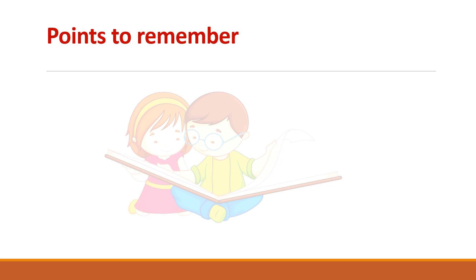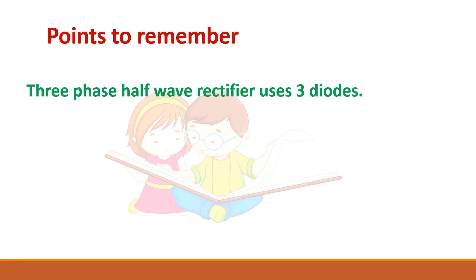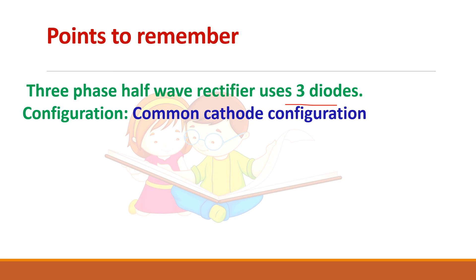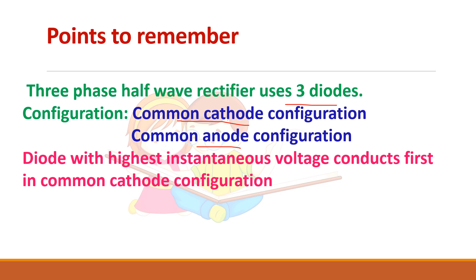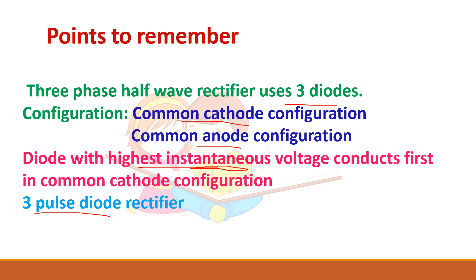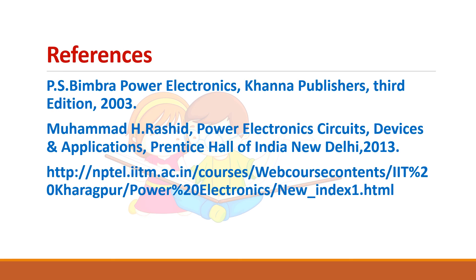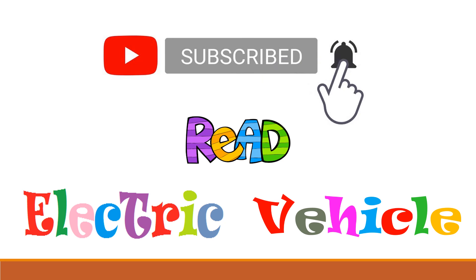Key points to remember: the 3-phase half-wave rectifier uses three diodes and has two configurations — common cathode and common anode. In the common cathode arrangement, the diode with the highest instantaneous voltage conducts first. It is also called a three-pulse rectifier because it produces three pulses per cycle, and each diode conducts for 120°. If you liked the video, please subscribe to the channel. Thank you.